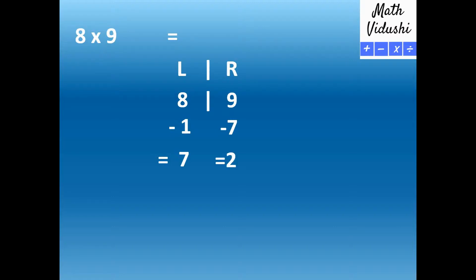So now you just combine the two answers, the left and right part of the answer, and you would get 8 multiplied by 9 is 72. Let's try another number.